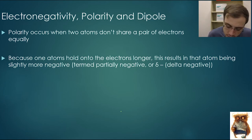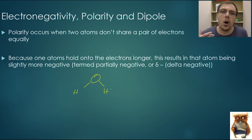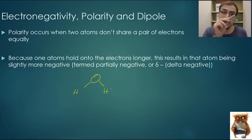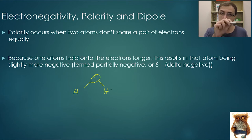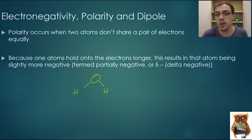A good example of this is if we look at water. Oxygen is very, very electronegative. The trend for electronegativity is left to right, bottom to top, where fluorine is the most electronegative element on the periodic table.